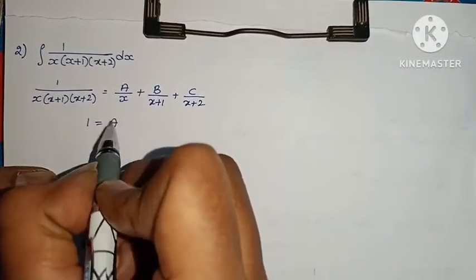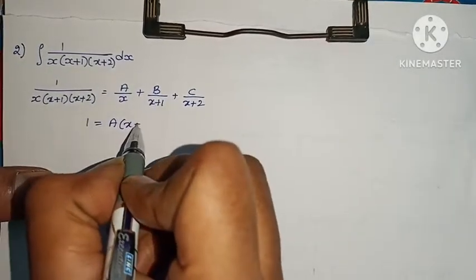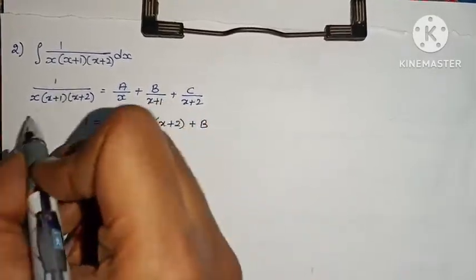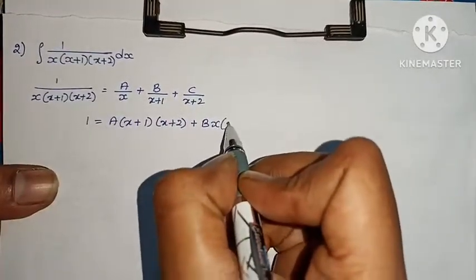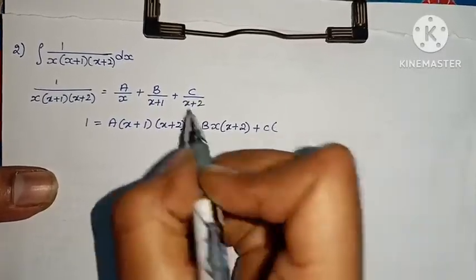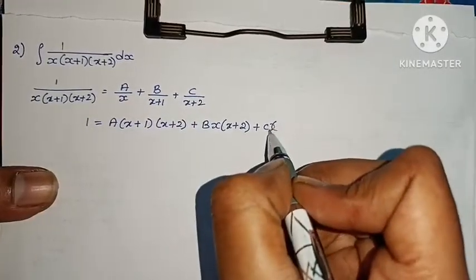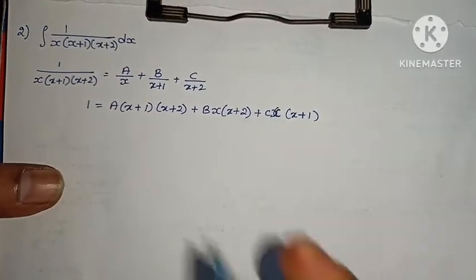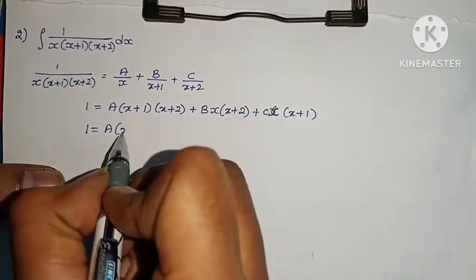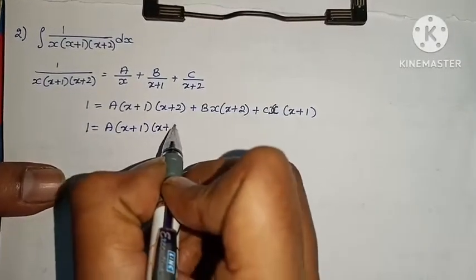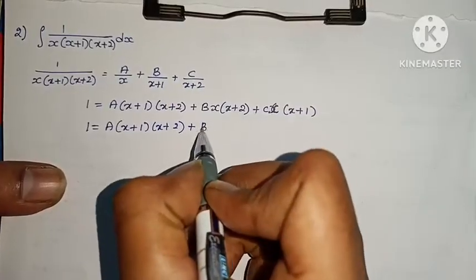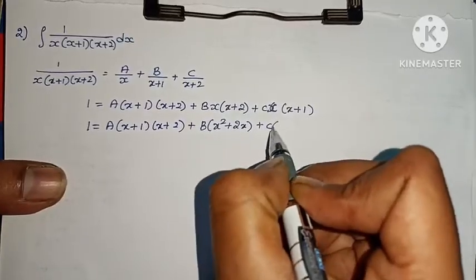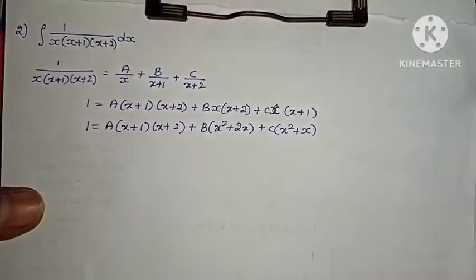Taking LCM: 1 equals A into (x plus 1)(x plus 2) plus B into x(x plus 2) plus C into x(x plus 1). Expanding: A into (x plus 1)(x plus 2) plus B into (x squared plus 2x) plus C into (x squared plus x).